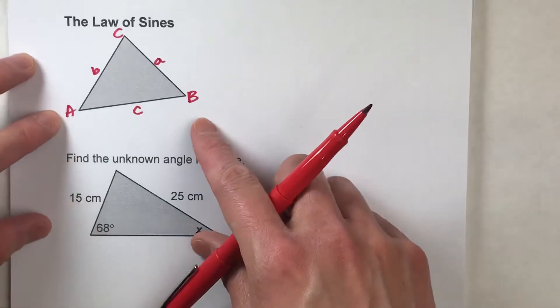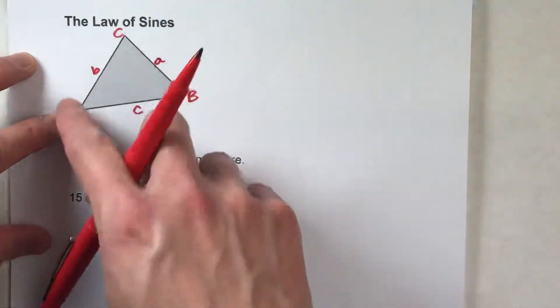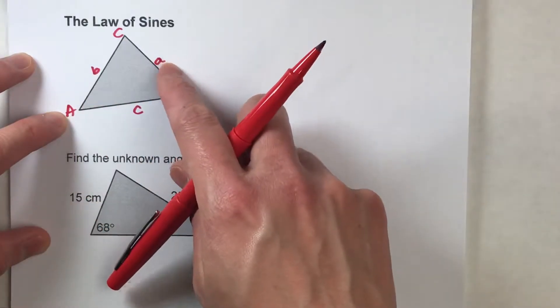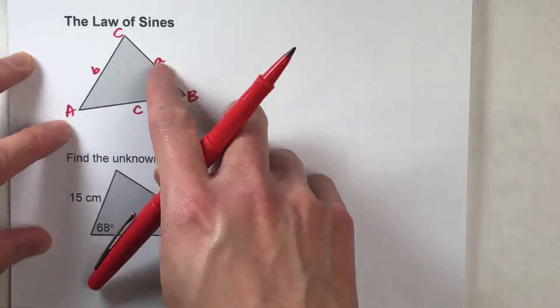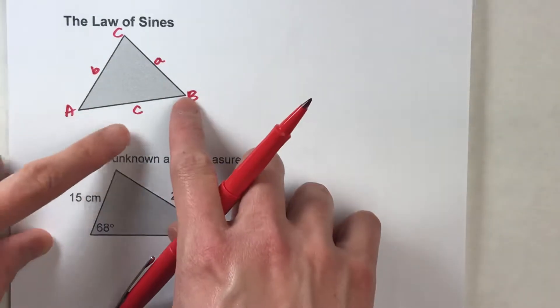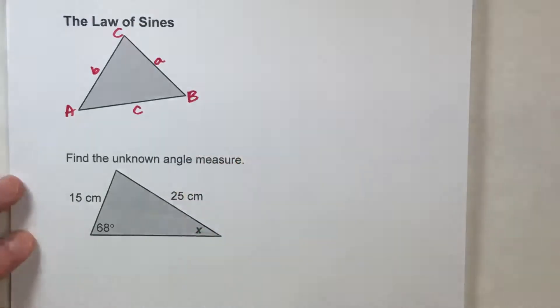So, in this triangle here, I've just labeled the vertices A, B, and C. And across from each angle, I've labeled each side length the little version of that letter. So, across from angle A is little a, across from angle B is little b, and across from angle C is little c.